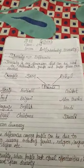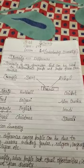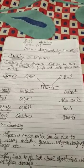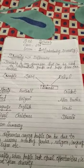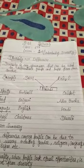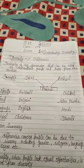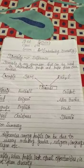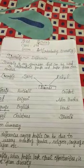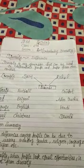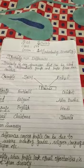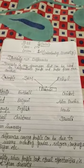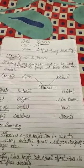Rahul and Sam like different sports and different food. But they are friends and live in the same locality and play in the same ground. Same as if you look around in your neighbourhood, you see each individual is unique and yet different from each other.